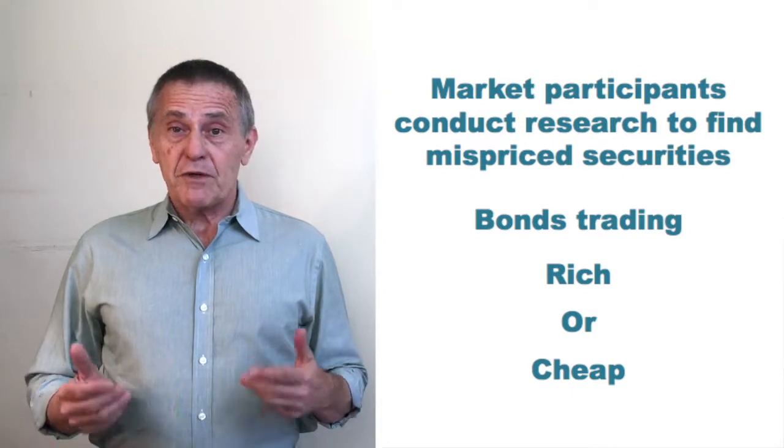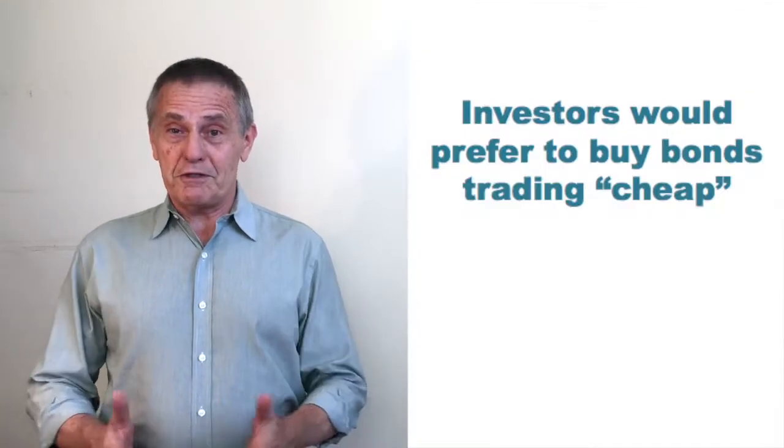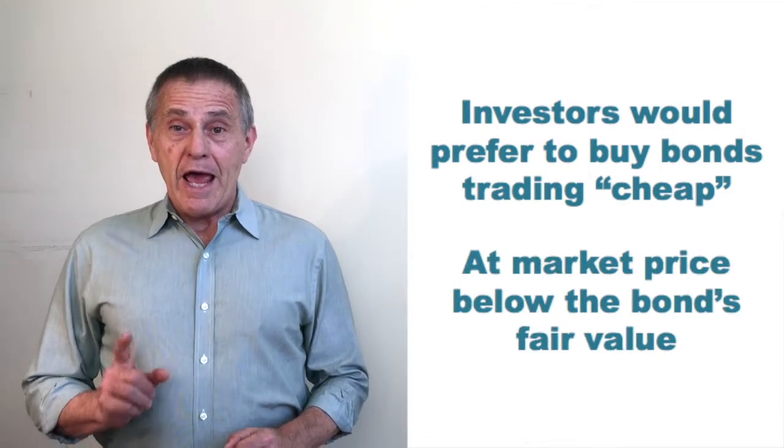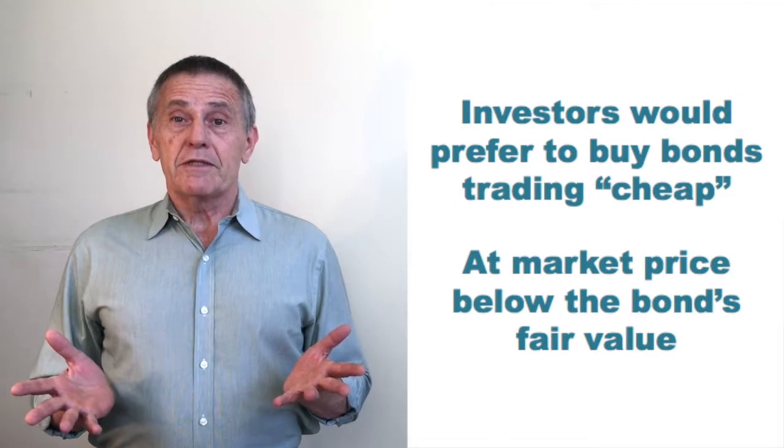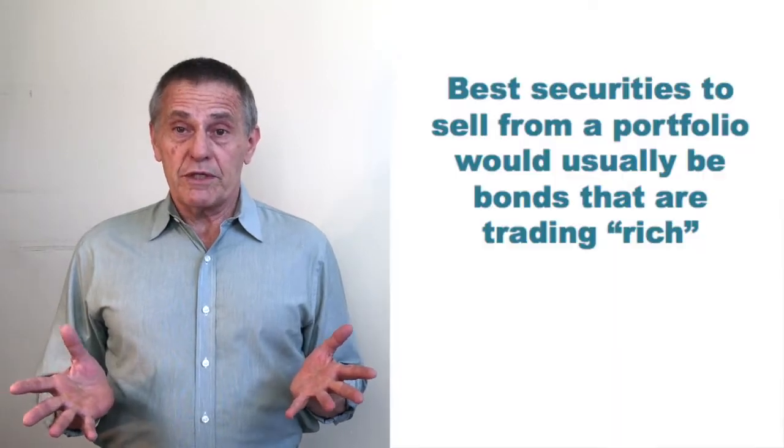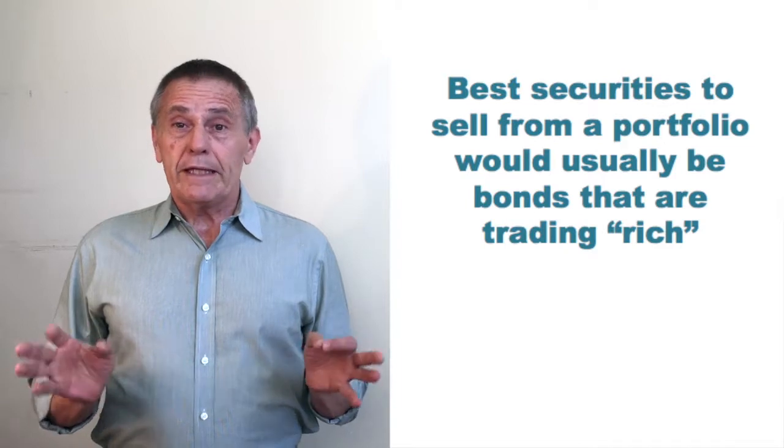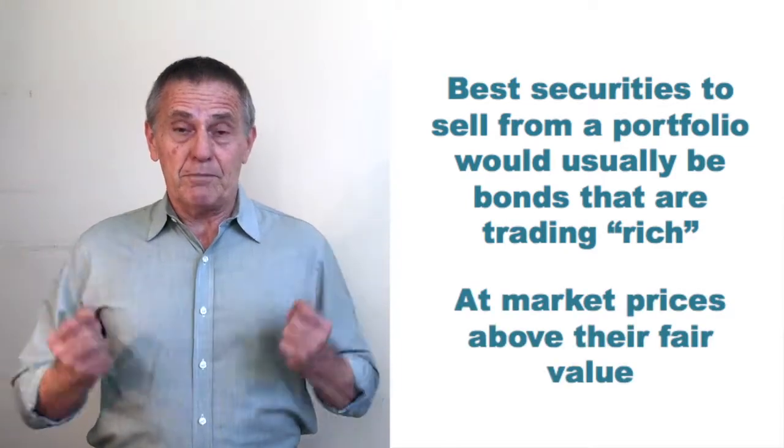Naturally, if an investor has money to commit to fixed income investment, they would ideally like to buy something the market seems to be offering at a special price, currently trading cheap or below fair value. And conversely, if a portfolio manager needs to sell a security to raise cash for any reason, they don't want to sell some security randomly out of their portfolio, they'd like to sell something that presumably the market is currently valuing somewhat excessively.